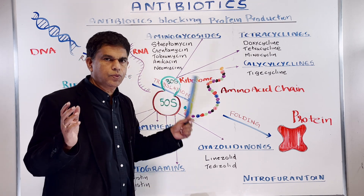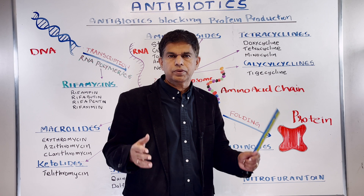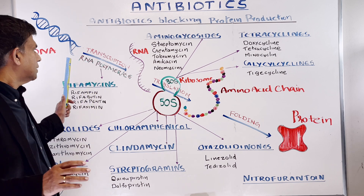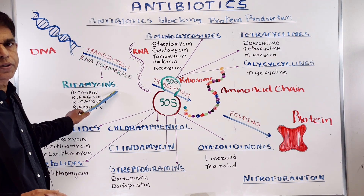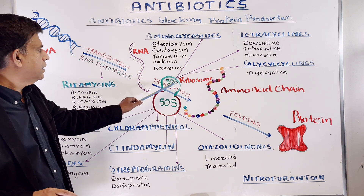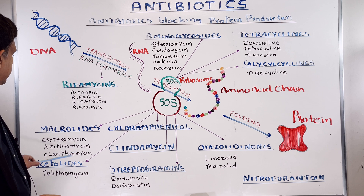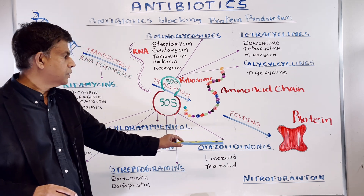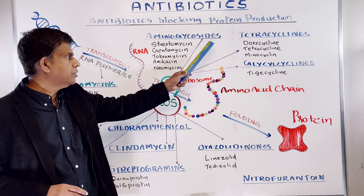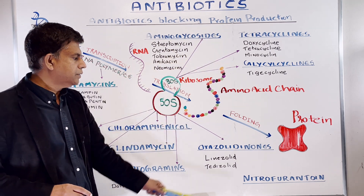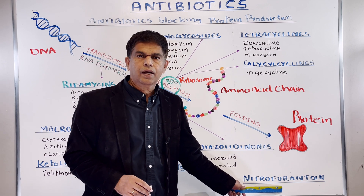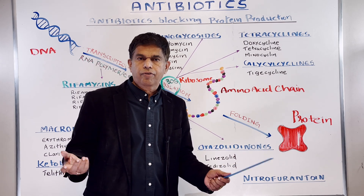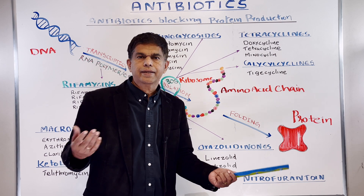In summary, here is the classification. For RNA polymerase inhibition, you have the rifamycins — the only group to know. For the 50S subunit, you have macrolides, ketolides, chloramphenicol, clindamycin, streptogramins, and oxazolidinones. For the 30S subunit, you have aminoglycosides, tetracyclines, and glycylcyclines. Nitrofurantoin is a separate class: it goes into the cell, is broken down by flavoproteins, and the reactive metabolites attack DNA and ribosomes.